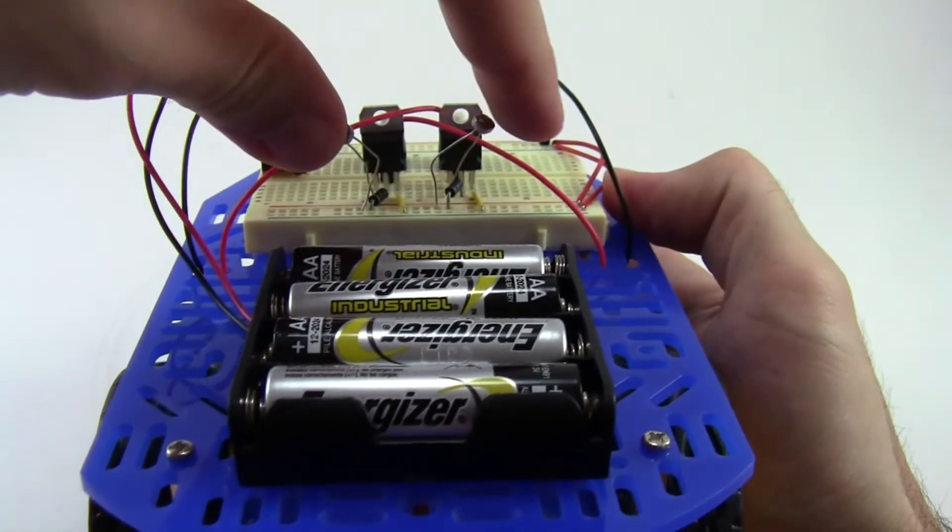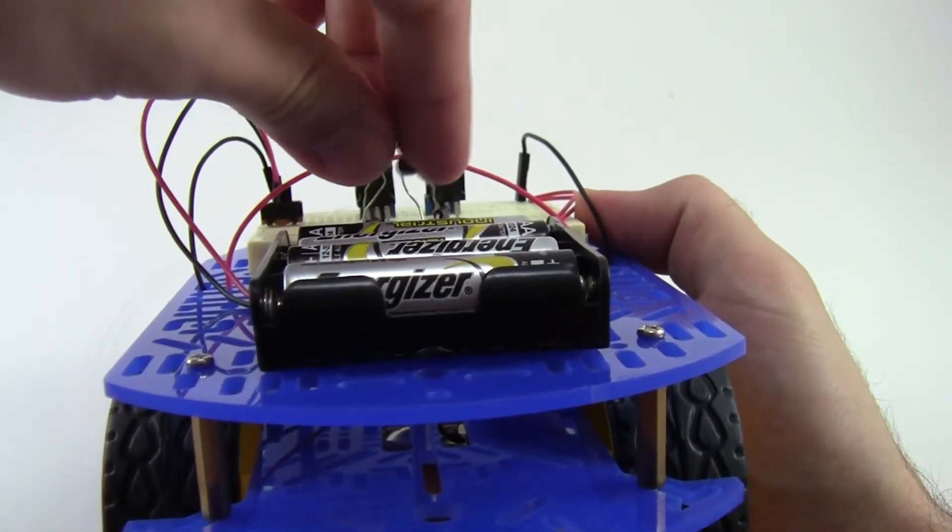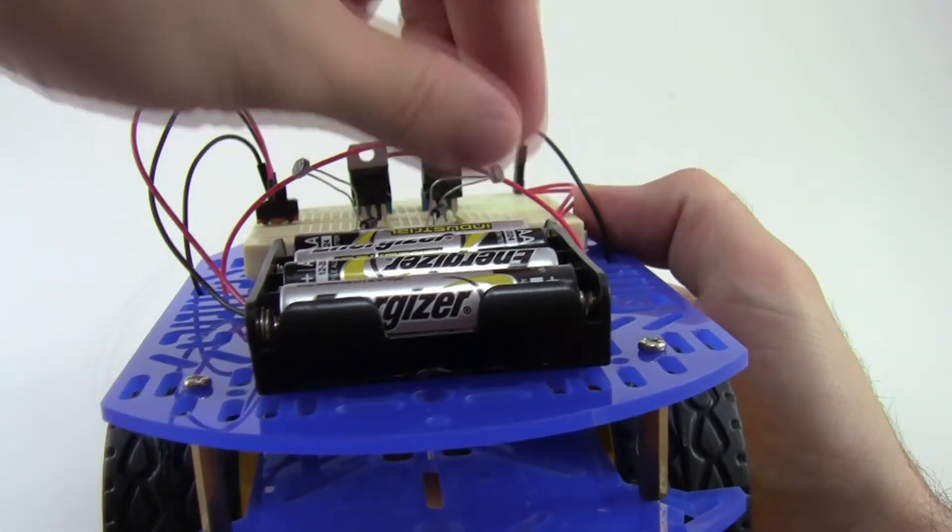You can also adjust the light sensors, for example, by pushing them closer together or spreading them farther apart. This will affect how your robot steers.